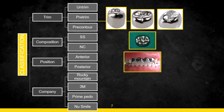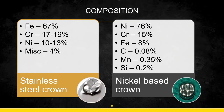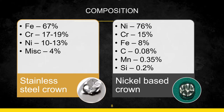Now the composition: stainless steel crowns are divided into stainless steel and nickel-chromium crowns. Stainless steel crowns contain iron at 67%, chromium at 17–19%, nickel at 10–13%, and 4% miscellaneous elements. Nickel-based crowns contain nickel at 76%, chromium at 15%, iron at 8%, carbon at 0.08%, manganese at 0.35%, and silicon at 0.2%.